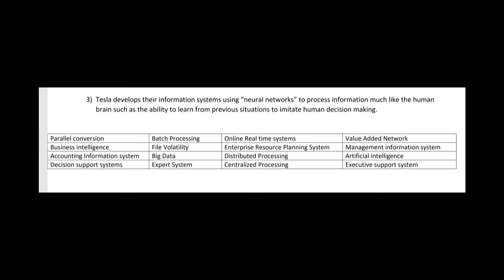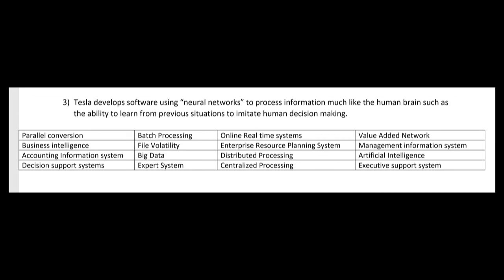Number three: Tesla develops their information system using neural networks to process information much like the human brain — including the ability to learn from previous situations — in order to imitate human decision making. Whenever you see neural networks on the CPA exam, think artificial intelligence. AI attempts to imitate human decision making. Historically software worked through if-then conditions, but AI uses neural networks — processing elements working together like the human brain, learning from previous situations — to imitate human decision making.